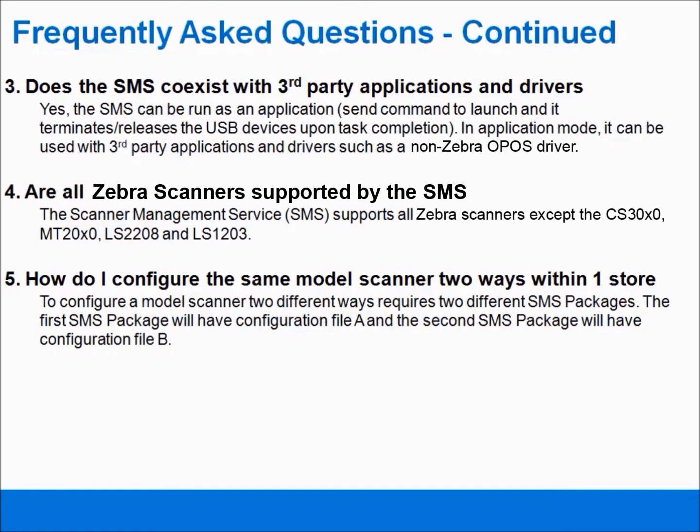Fifth, how do I configure the same model scanner two ways within one store? Configuring a model scanner two different ways requires two different SMS packages. The first SMS package will have configuration file A, and the second SMS package will have configuration file B. And this concludes your training on how to create an SMS package.